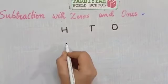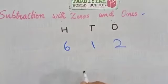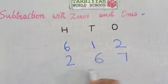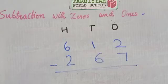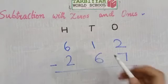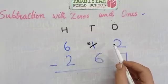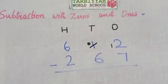Now see subtraction with ones. The numbers are 612 and 267. Two minus 7 is not possible, so we take borrow. One ten will give one, so 1 ten will become 0 tens and 2 ones will become 12 ones. 12 minus 7 is 5.